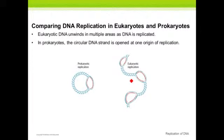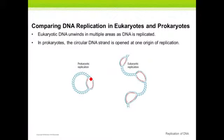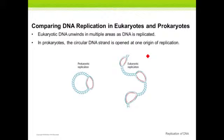Comparing eukaryotes and prokaryotes: they basically follow the same general rules. The key difference is that prokaryotes have their DNA on one giant circular DNA molecule, and replication starts in one location and goes around in a circle. Eukaryotes have their DNA on chromosomes, and replication starts in multiple locations and then finishes up. So the big difference is that in eukaryotes — like you, me, mom and dad — DNA replication starts in multiple places, while in prokaryotes it starts in only one location.